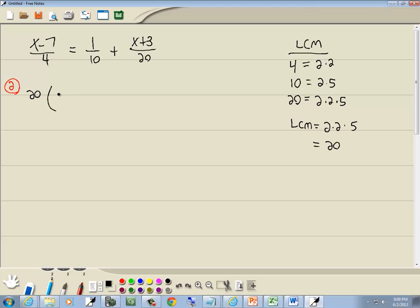And we'll multiply it times our first fraction, times the x minus 7 over 4. We'll multiply it times the 1 over 10, and we'll multiply it times the x plus 3 over 20.